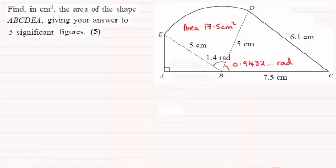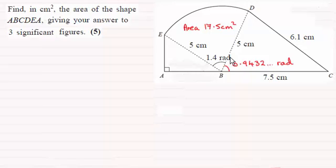Okay, welcome back. What we need to do is work out the area of triangle ABE and the area of triangle BCD, and then we can add together the three shapes.